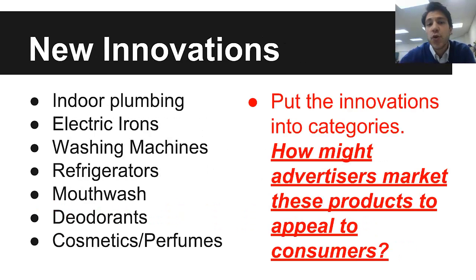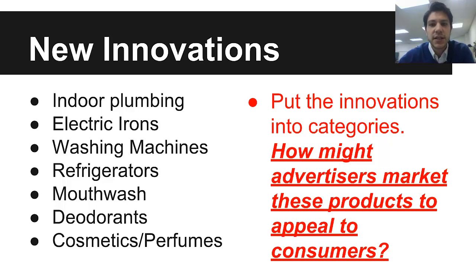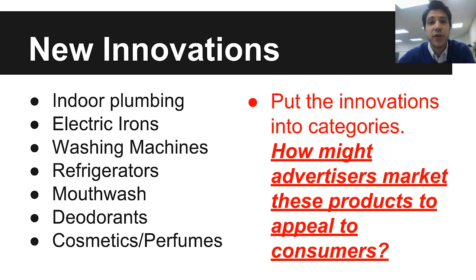New innovations coming out include indoor plumbing for everyone — it's not that it didn't exist before, it's just cheaper now — electric irons, washing machines, refrigerators, mouthwash, deodorants, cosmetics, and perfumes. Think about putting these innovations into categories. How might advertisers market these products to appeal to consumers? Think about advertising today — everything from Axe saying if you don't use this product you won't get a girl, to perfume ads where the naked guy swimming in the ocean won't come over on his surfboard if you don't use the right perfume. It's all very weird nowadays, but it was even weirder back then.